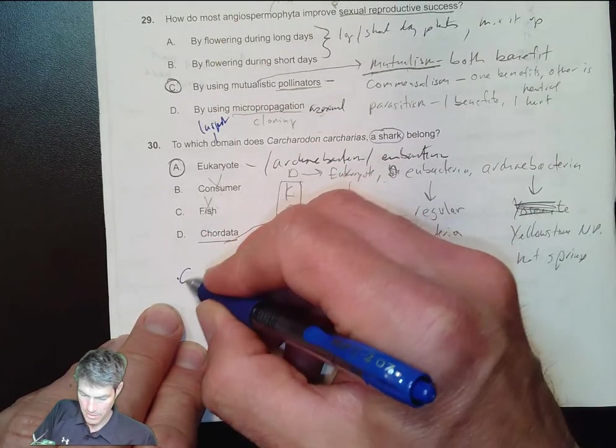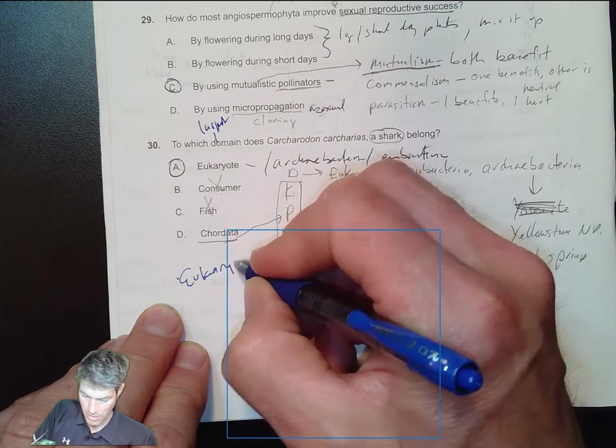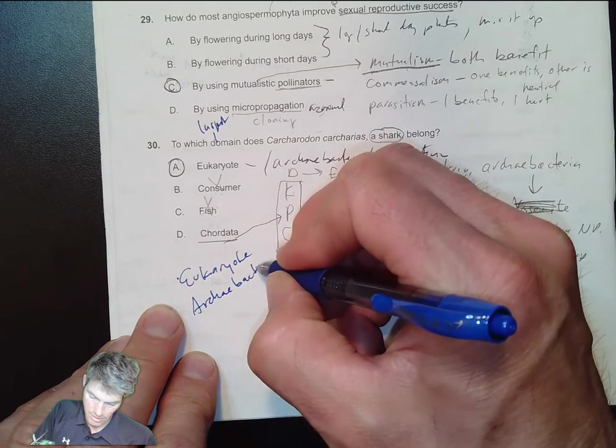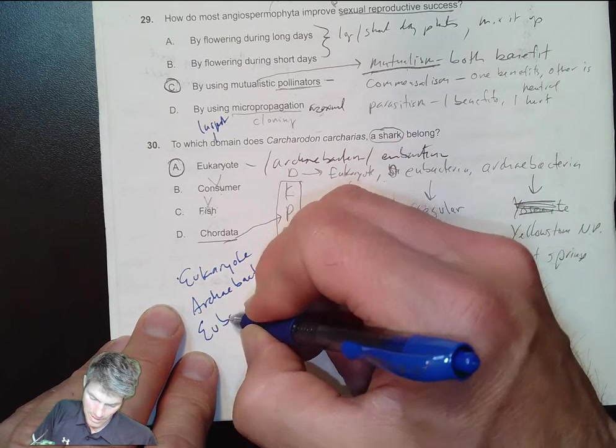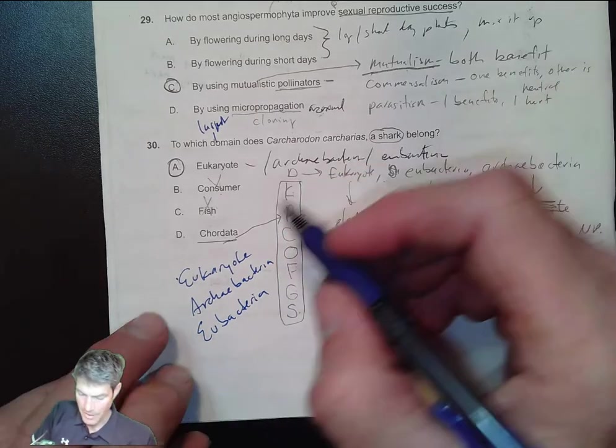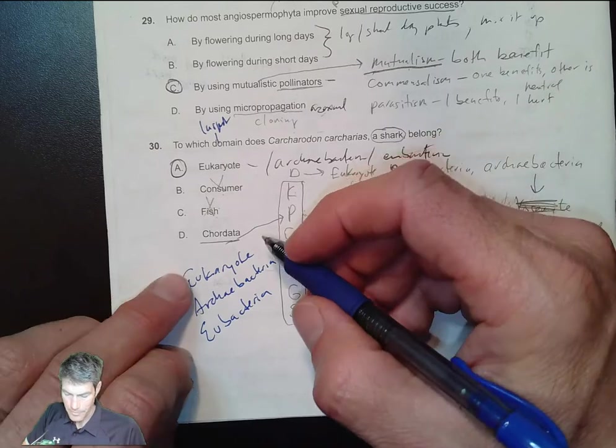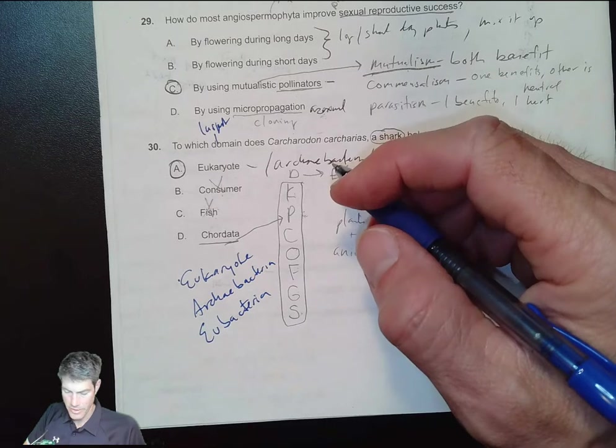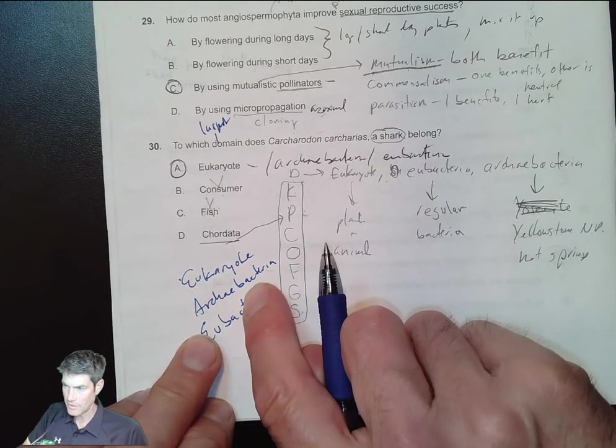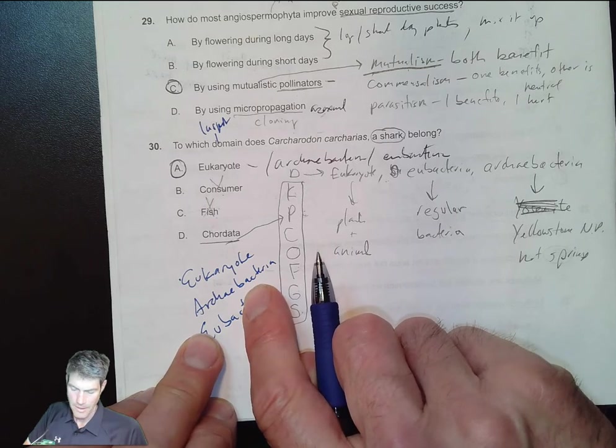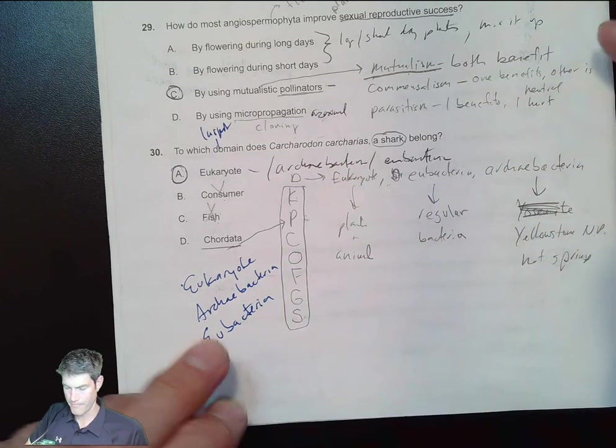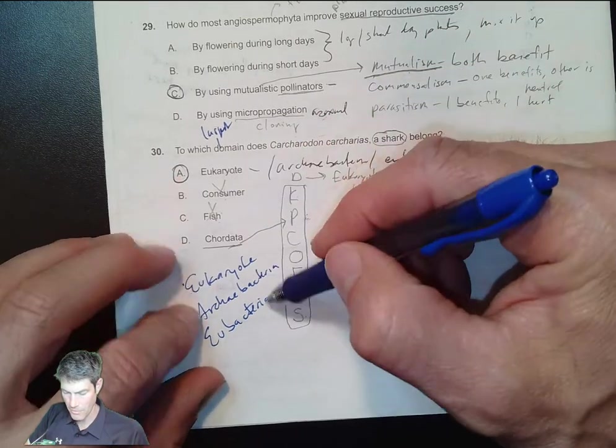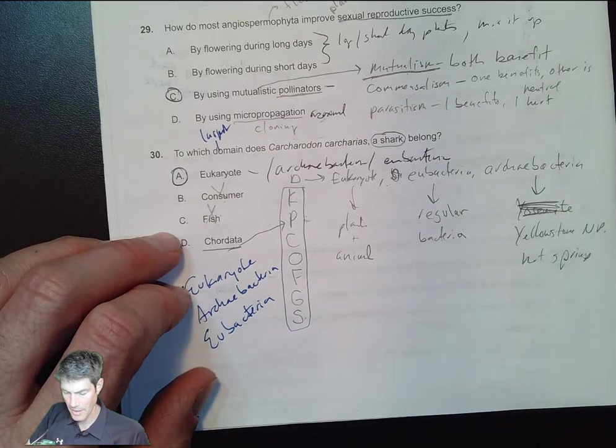Which domain? The largest category. Our domains are: eukaryote, archaebacteria, and eubacteria. Those are the three domains. Eukaryotes are things like us. Regular bacteria that live in your mouth or on your skin are eubacteria. Archaebacteria are things that live in hot springs, adapted for very extreme conditions. A shark would definitely be a eukaryote - it is a consumer.